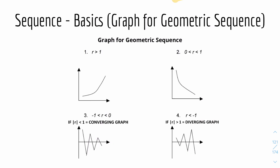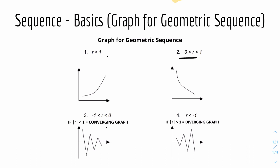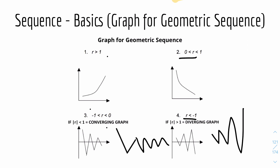Now we have some graphs for geometric sequence — four different cases. When R is greater than 1, the graph is divergent and goes up. When R is between 0 and 1, the graph is convergent, approaching the x-axis. When R is between minus 1 and 0, the graph alternates between positive and negative but still converges — going from positive to negative repeatedly. And when R is less than minus 1, the graph is divergent, alternating between positive and negative with increasing magnitude. Note that case 3 goes from big to small while case 4 goes from small to big.